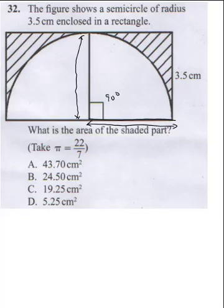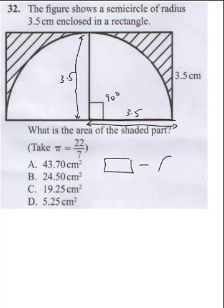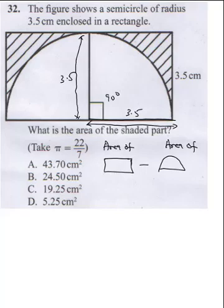Since this side equals this side, both measurements are 3.5 cm, meaning the shape is a square. The area of the shaded path equals the area of the rectangle minus the area of the semicircle.